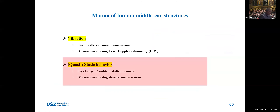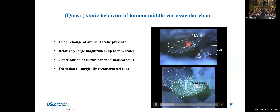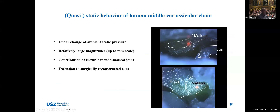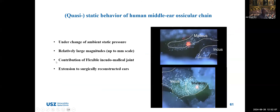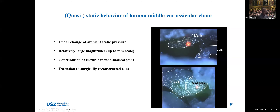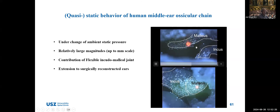Now I would like to move to the static behavior. The static behavior of the tympanic membrane occurs under change of ambient static pressures. The magnitude of this motion is fairly large compared to the vibrational motion during sound transmission. The flexible malleoincudal joint contributes to the transmission of this large deformation through the ossicular chain. This study can also be used to assess risks in surgically reconstructed ears.